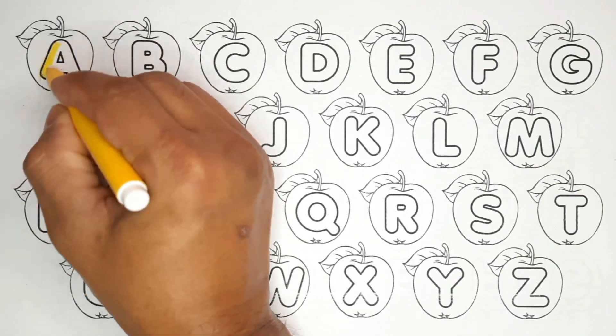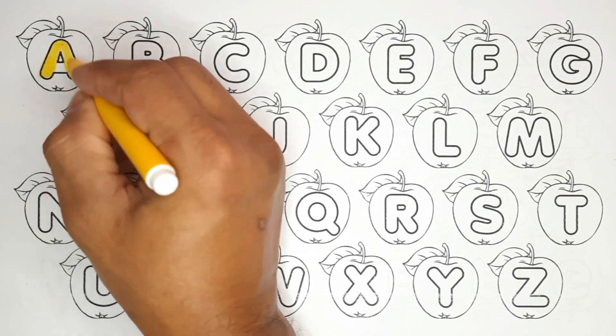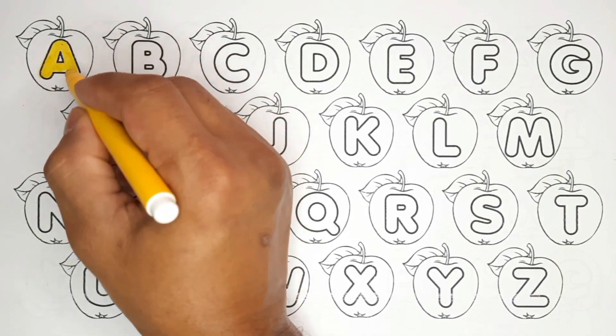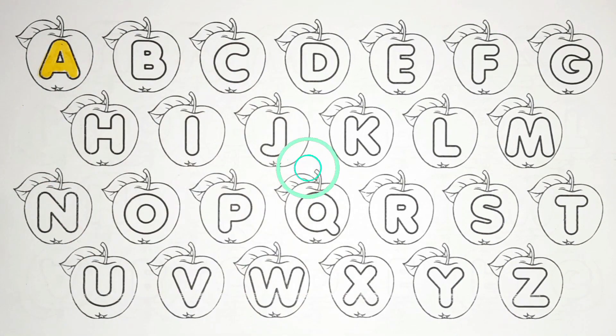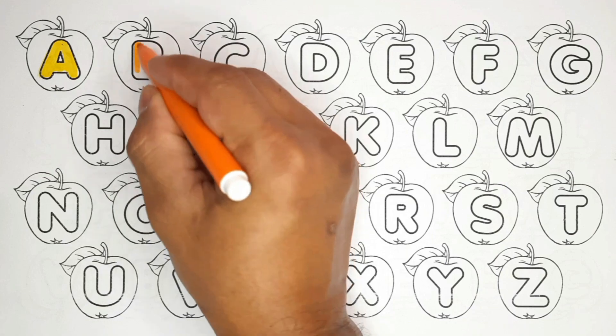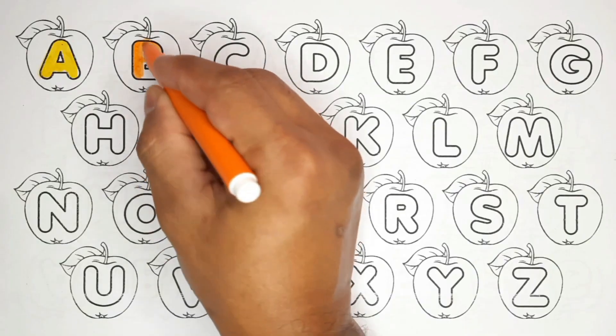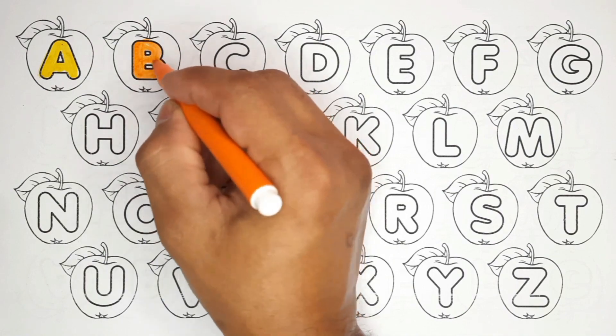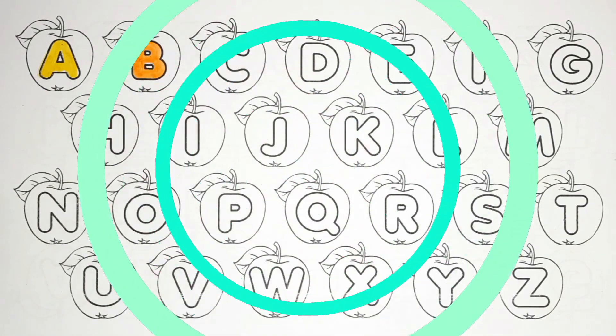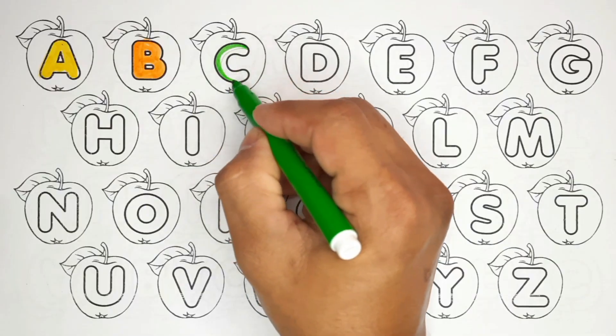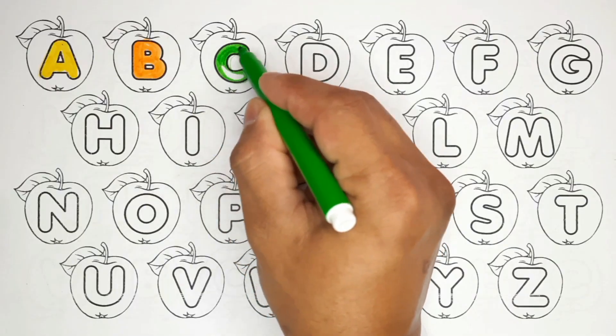A, A for airplane. A, A for airplane. B, B for ball. B for ball. C, C for cat. C for cat.